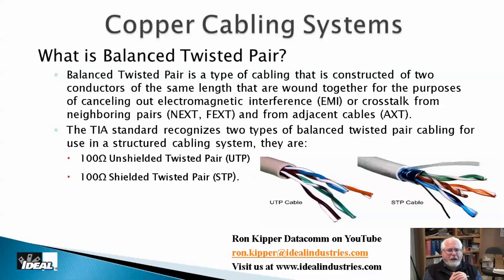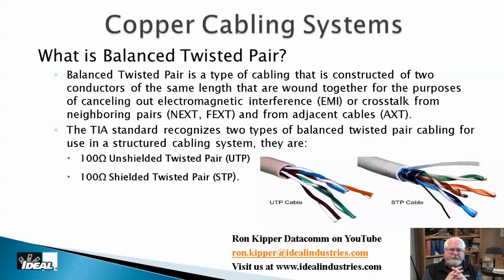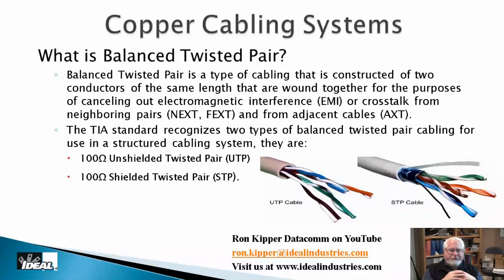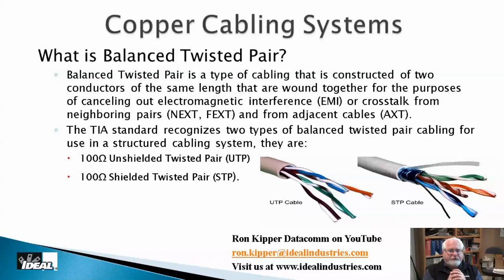This balanced twisted pair construction is very resistant to outside noise or interference. Coaxial cable, by contrast, is unbalanced and susceptible to outside noise. Category wire is rated at 100 ohms, meaning connectors, routers, and switches in the signal path are also 100 ohm. The specification is 100 ohms plus or minus 15 percent. Any difference in impedance is like a bump in the road — most of the signal passes, but some reflects back, which is called return loss.